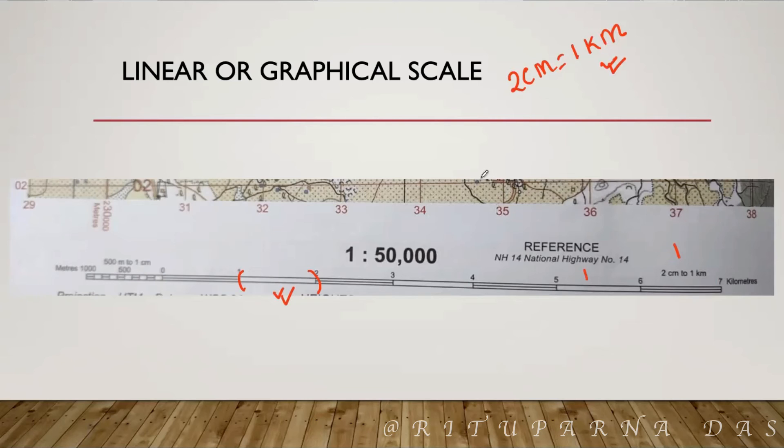Now, you are aware of the primary division. But, what is this then? This is known as the secondary division. What is the use of this secondary division? In case, if I ask you to find the distance, you can easily tell this is 2 cm or 2 cm means 1 km. Now, if I ask you to find the distance between these two points, it will be a little difficult. So, you can take the help of this secondary division.